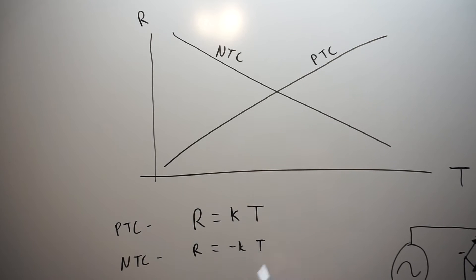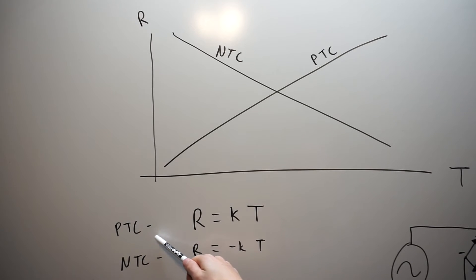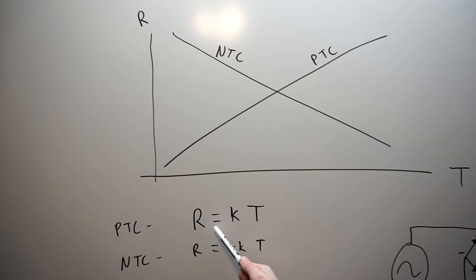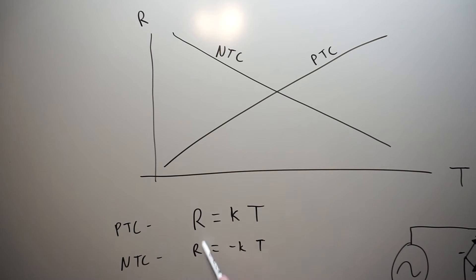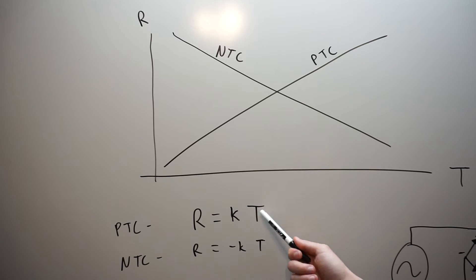If you wanted a very simple linear equation to model this: a PTC would have a positive temperature coefficient, so its resistance R would equal some positive coefficient K times T, the temperature. For an NTC, the resistance R would equal a negative coefficient times T, the temperature. Though like I said, oftentimes they're not really this simple.